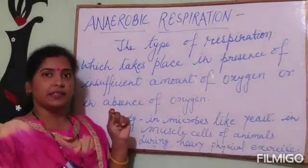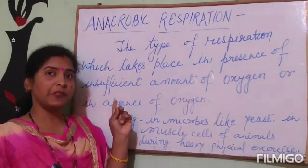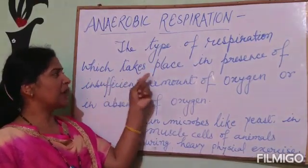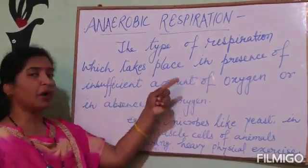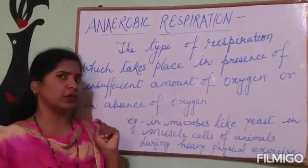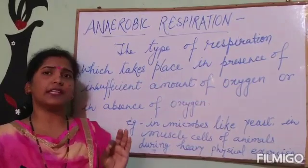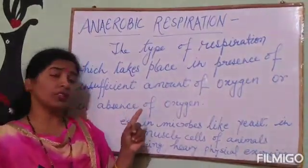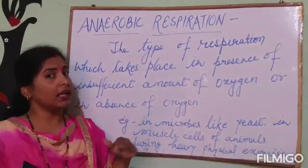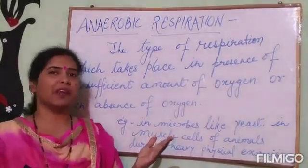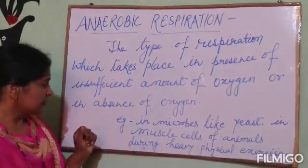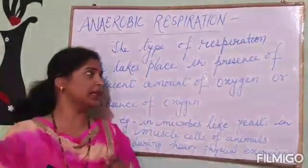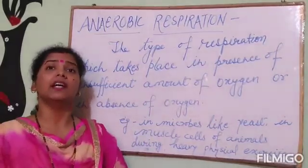The second type of respiration is anaerobic respiration. This is the type of respiration which takes place in the presence of an insufficient amount of oxygen or in the complete absence of oxygen. When there is no sufficient oxygen present, living beings perform anaerobic respiration. For example, in microbes like yeast or in the muscle cells of animals during heavy physical exercise, anaerobic respiration takes place.